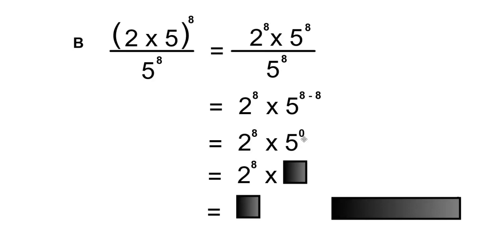And any power with an exponent of 0 equals 1. So that'll be 2 to the 8 times 1, which is just 2 to the 8.